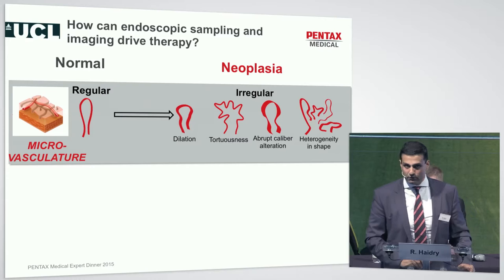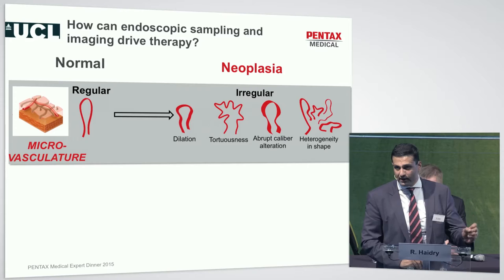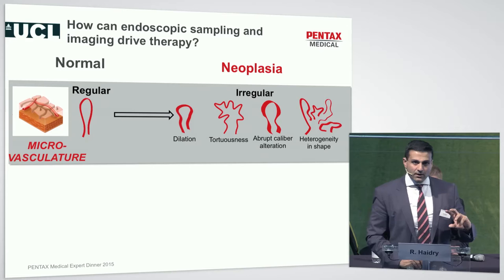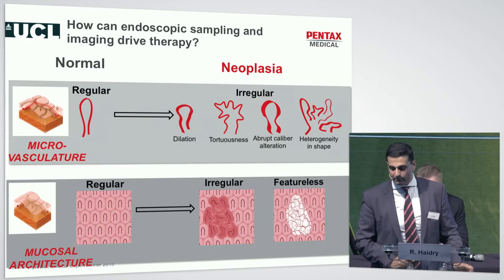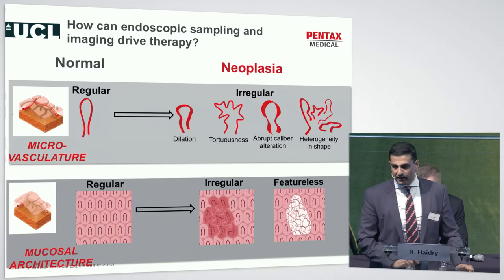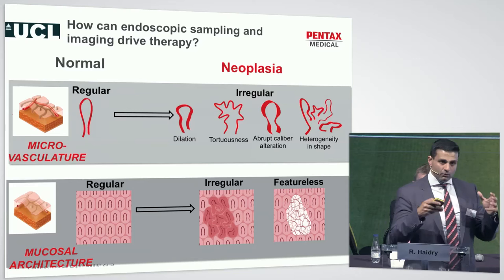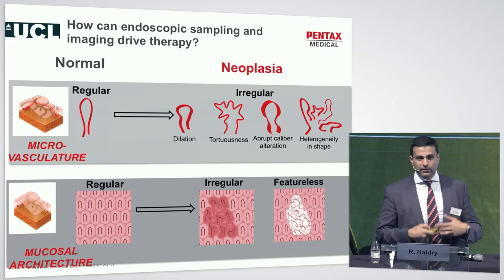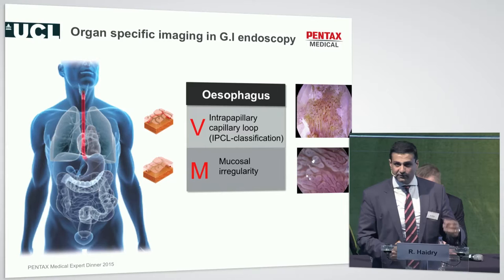We know that whether it's in the esophagus or in the stomach, disorders in the vasculature — from regular through irregular to dilatation and tortuousness — go through a stage of normal to neoplasia. The same applies for mucosal architecture, whether that's colonic polyps, gastric pits, or esophageal pits. We go from regular, well-organized mucosa to irregular and then featureless, absent mucosa — all indicative of neoplasia.